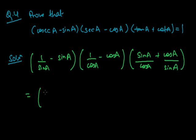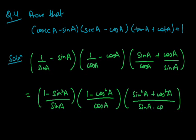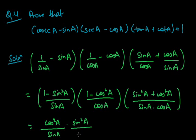Taking LCM in the third bracket (tanA + cotA) gives (sin²A + cos²A)/(sinA · cosA) = 1/(sinA · cosA). Now (1 - sin²A) = cos²A and (1 - cos²A) = sin²A. So LHS = (cos²A/sinA) · (sin²A/cosA) · (1/(sinA · cosA)). The cos²A cancels with cosA·cosA and sin²A cancels with sinA·sinA, giving 1.